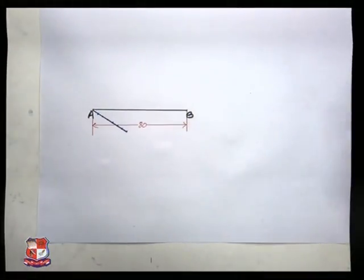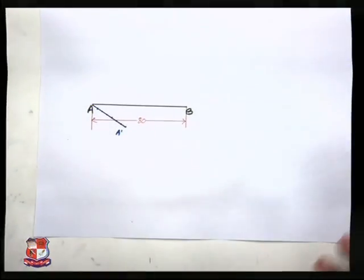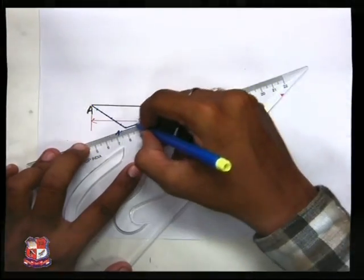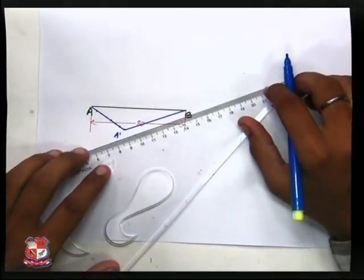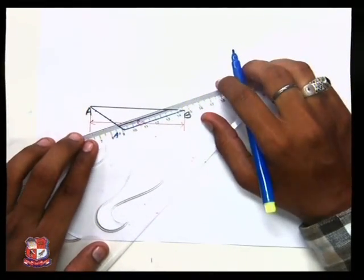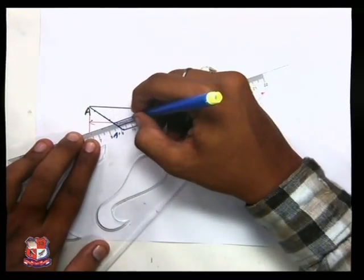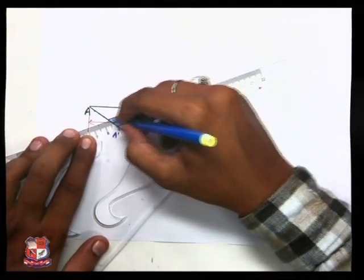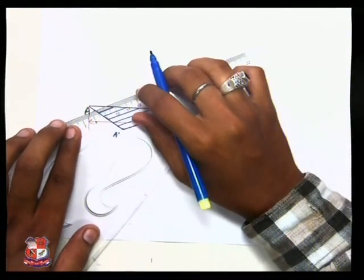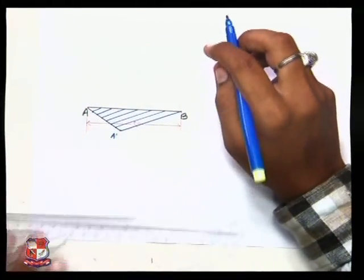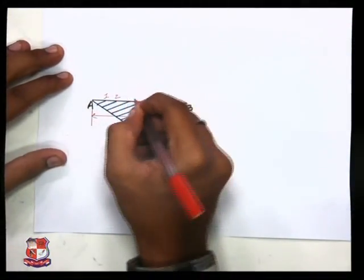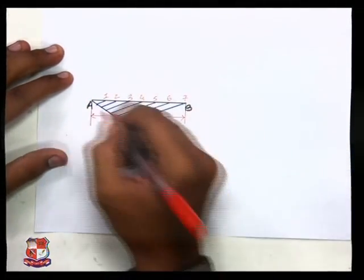Now if you say this line is A A dash, then join A dash B. Now take the parallel projections of the points you have just taken on this 35 mm line and you will directly get equal number of divisions on 80 mm length line. As you can see, you have got one, two, three, four, five, six, and seven equal parts.